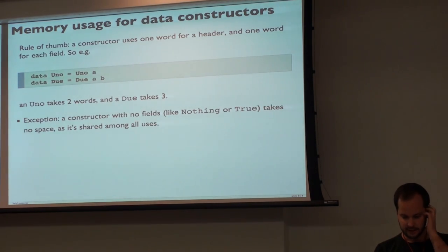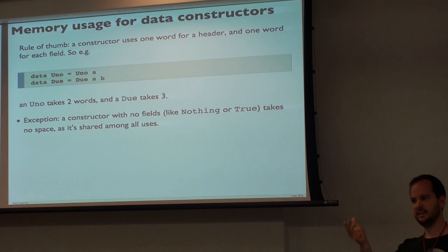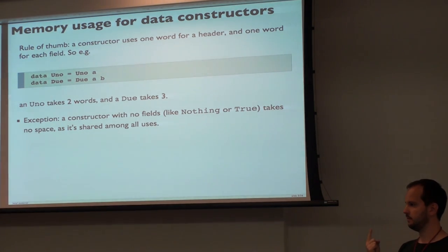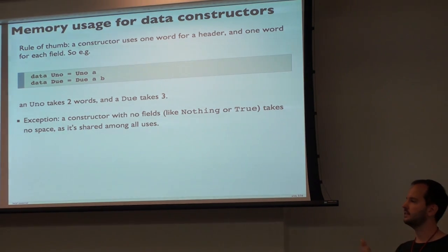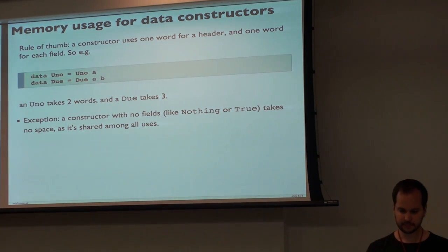The second thing you need to know: there are a number of basic types in Haskell — Word16, Word8, Word64, Int, Char, and some others. All the basic types basically take one word, with a few exceptions. A Double will take two words on a 32-bit machine because it's a 64-bit value. And there are some native types like ByteArray that have some other piece costs. But the basic principle is one plus the number of fields.